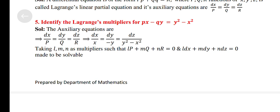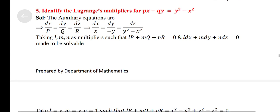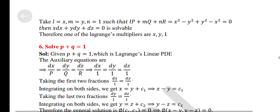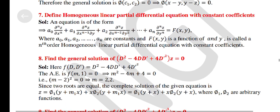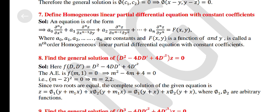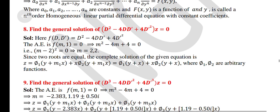Identify the Lagrange's multiplier for px − qy = y² − x². Solve p + q = 1. Define homogeneous linear partial differential equations with constant coefficients. Find the general solution.